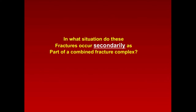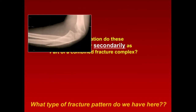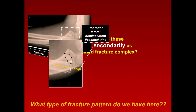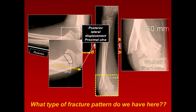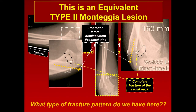Some fractures occur secondarily as part of a combined fracture complex. Here's a case with posterior angulation of the ulna and a complete fracture of the radial neck with posterolateral displacement of the proximal ulna. This is a Type II Monteggia lesion. Remember, Type II Monteggia lesions often involve fractures of the radial neck in addition to a fracture of the olecranon.